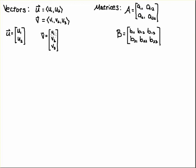These are called columns, and the u1, u2, or the v1, v2, v3—these are called the components of the vector. For matrices, we often call these the entries.